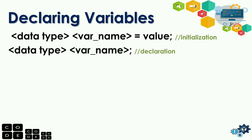The next way is: data type, variable name, and semicolon directly. This is called declaration. Why is it called declaration? Because you are only saying that you need this variable in your program. A value will be assigned later. So, initialization has a value, while declaration does not yet have a value.